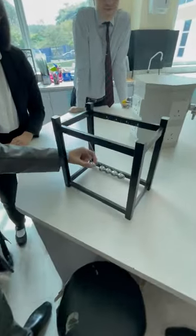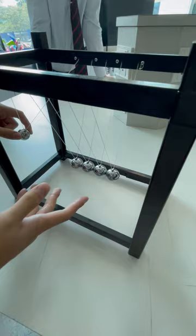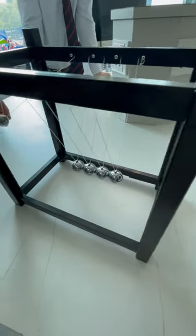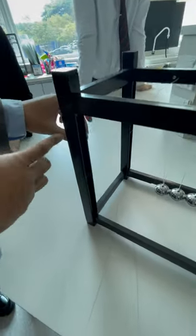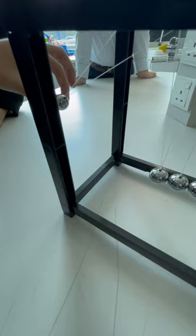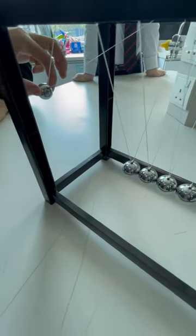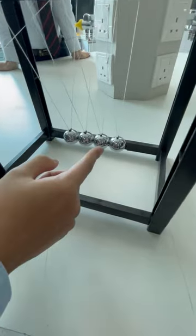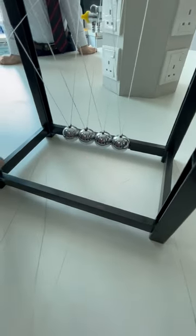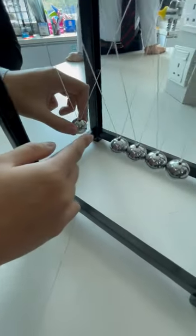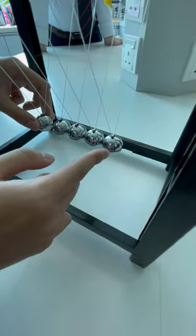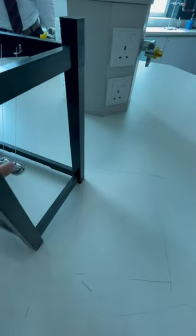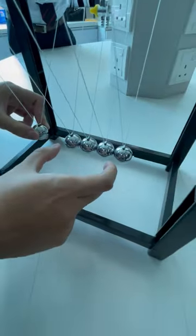As you can see here, these balls are pretty much at rest. When we take one and give it GPE in this position, once I let it go it will convert GPE into KE and it will collide with these. As you can see, all these balls are touching already, so there will be a collision and it will transfer the energy all the way to the last ball which will go up while these remain relatively stationary.